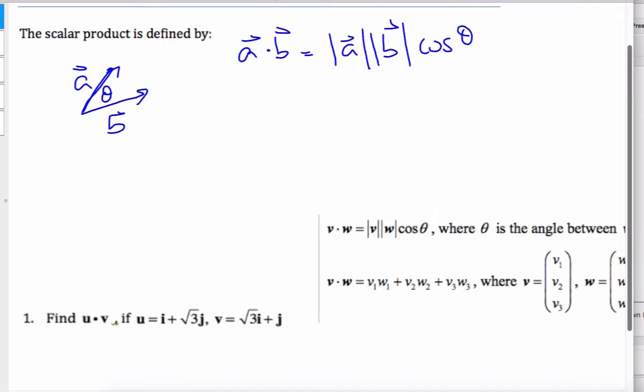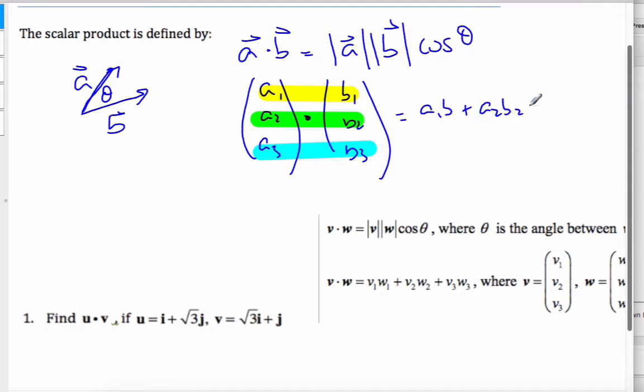I can also do the dot product by doing a computation. Imagine if I had vector A1, A2, A3 dot B1, B2, and B3. The way I do this is I take this and I multiply those two, add it to those multiplied, add it to those multiplied. When I do that, I get A1B1 plus A2B2 plus A3B3.